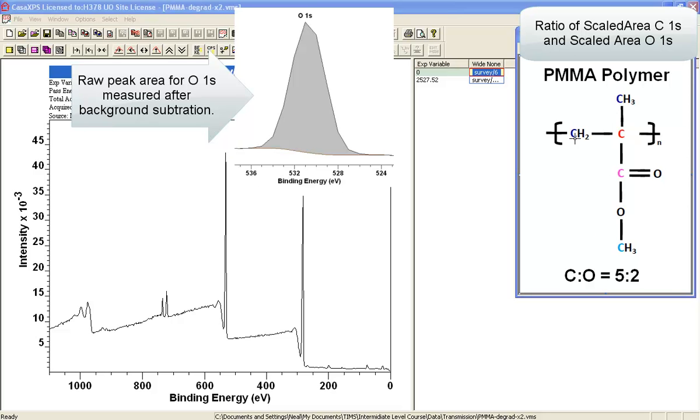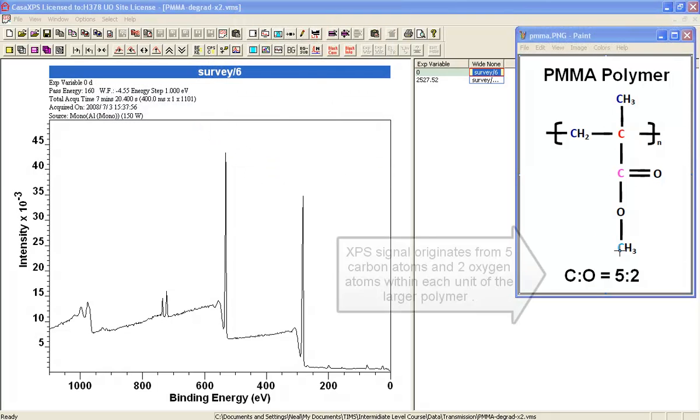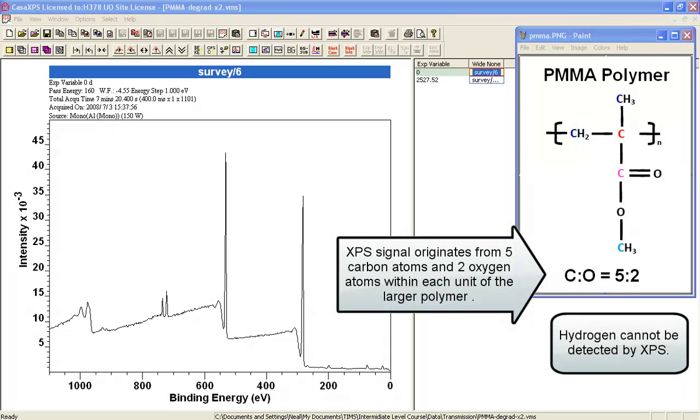Counting the carbon, you can see we have five carbon atoms and there are two oxygen. Therefore, we should expect a ratio of five to two.